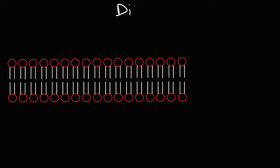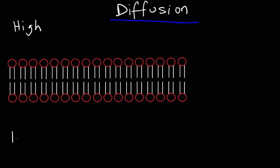In this video, we're going to talk about diffusion, specifically the factors that affect the rate of diffusion. But first, what is diffusion? How would you define it? Diffusion is the movement of material from a region of high concentration to a region of low concentration.